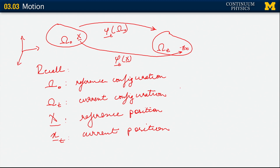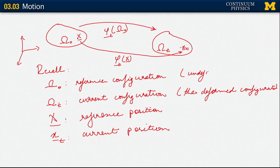In the context of solid mechanics, the current configuration is often thought of as a deformed configuration, or one in which there is stress. So the current configuration is often called the deformed configuration, and in that context the reference configuration is often called the undeformed configuration.